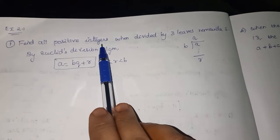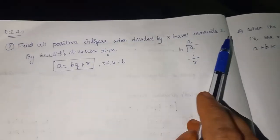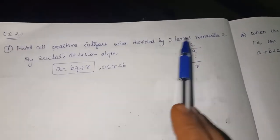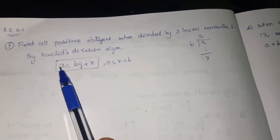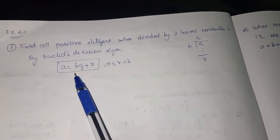We have to find all the positive integers. When we divide by 3, it should have remainder 2. So according to this, it's all of Euclid's division algorithm. So by Euclid's division algorithm, we have to write this first.